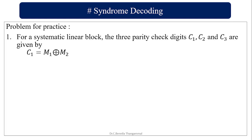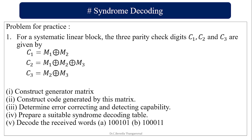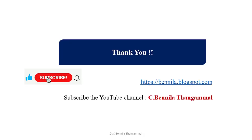Here is a problem for practice. Given parity check equations C1, C2, C3, calculate the generator matrix, construct the code, find the error correcting and detecting capability, find the syndrome decoding table, and decode the received vectors. Thank you — subscribe to my channel for automatic updates.